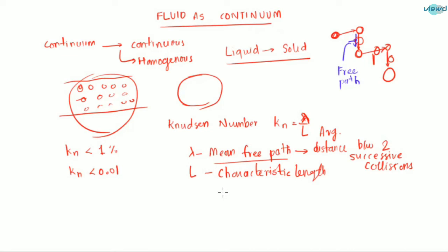The characteristic length is the dimension we consider in certain cases. If there is a pipe, we consider the characteristic length as the diameter. If there is a plate and there is fluid flow over it, we consider the length of the plate as the characteristic length.